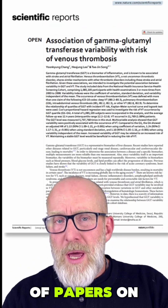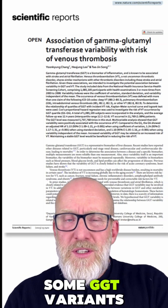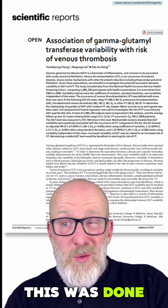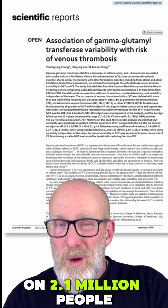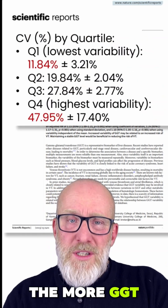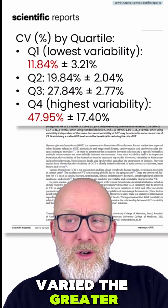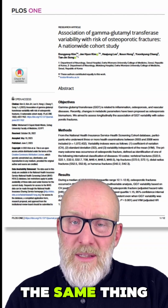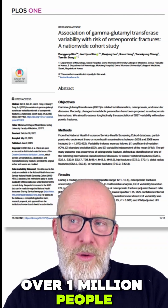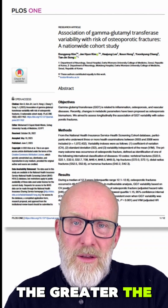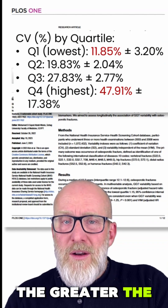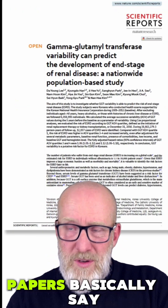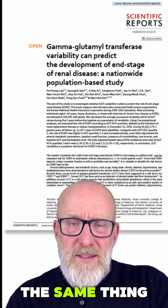There are a bunch of papers on this. I'll quickly show you some GGT variability data and the risk of venous thrombosis — this was done on 2.1 million people. The more GGT varied, the greater the risk of venous thrombosis. Another paper did the same thing on over one million people: the greater the GGT variability, the greater the risk of osteoporotic fractures.